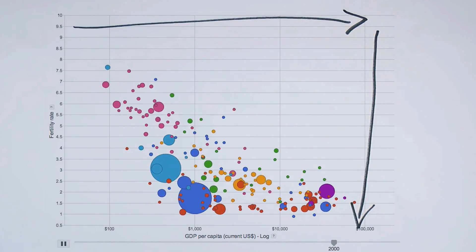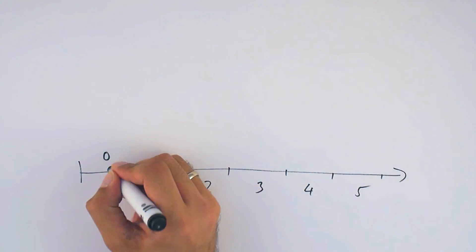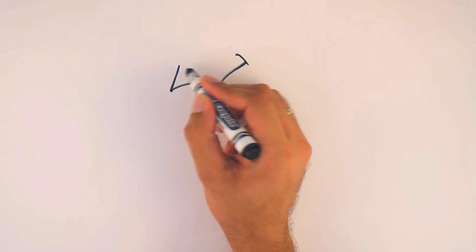There are several possible explanations for this trend. As people get richer, we also see reduced childhood mortality and better educated women.